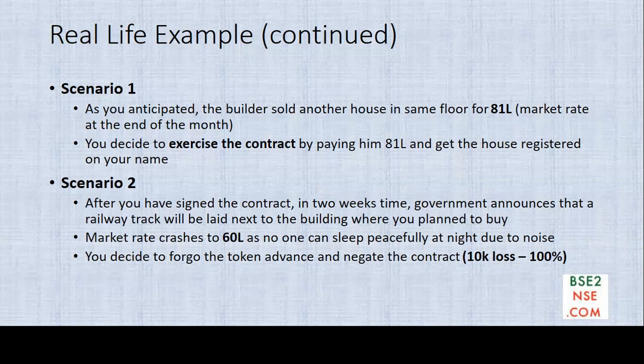The builder made 10,000 just by waiting for a month holding the house. One important thing to note is that in the contract the builder cannot force you to exercise it — meaning the builder cannot ask you to pay 81 lakhs. Only if you wish to exercise can you exercise, but the builder cannot force you. That is the main thing you need to understand.